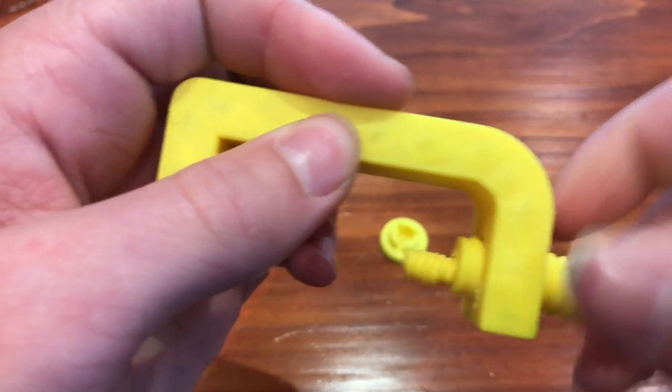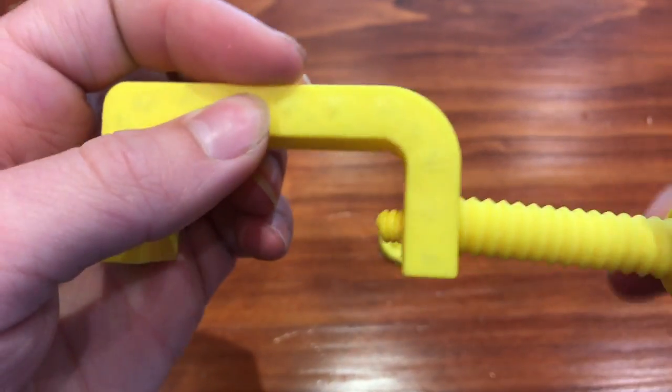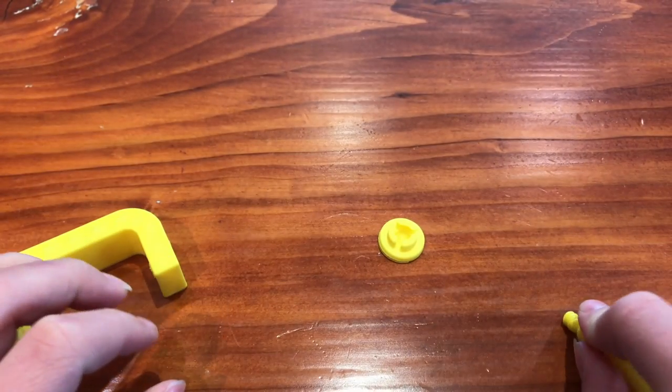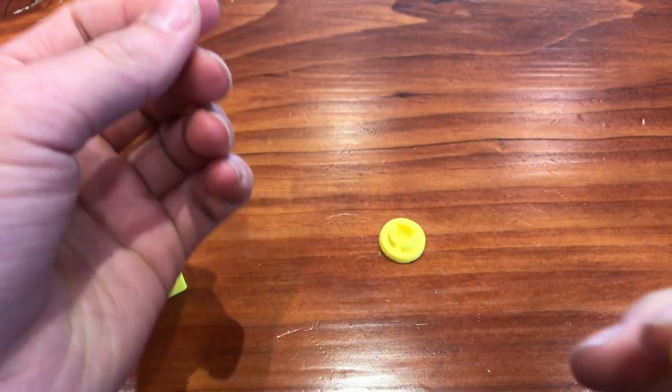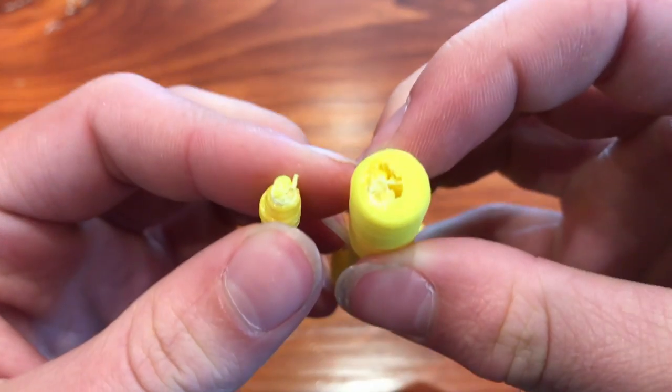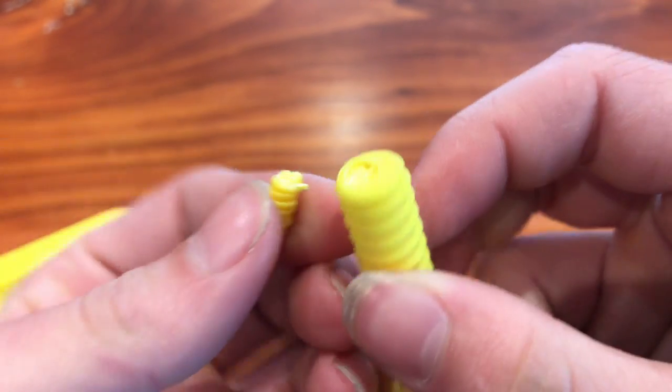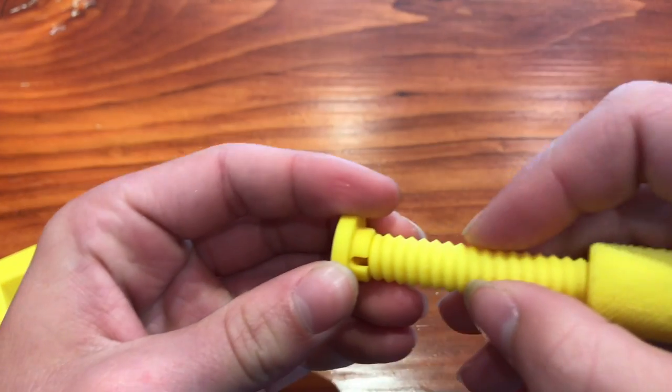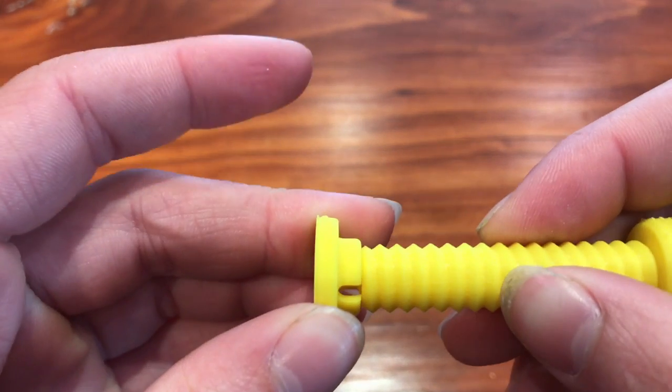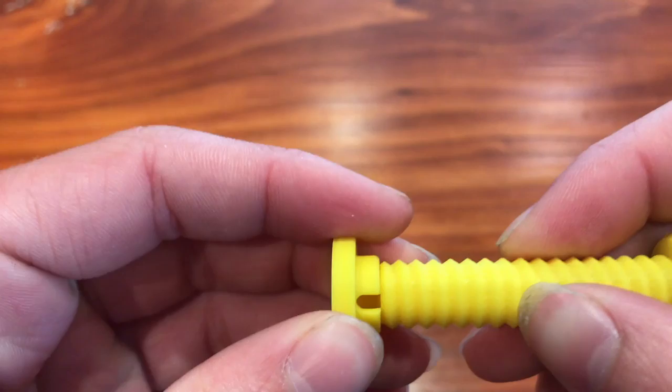What I'm actually gonna do here is break that little knob off. Just go and there we go. Not gonna need that anymore. Now I think I'm gonna find some super glue and glue this right on there.